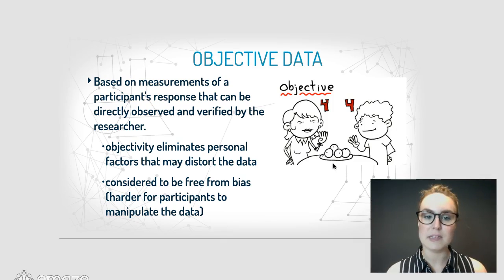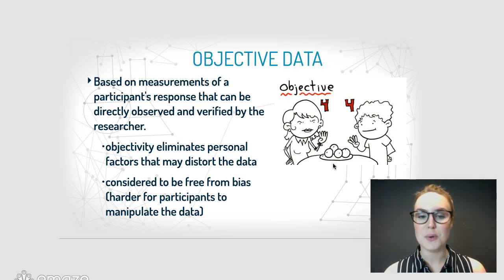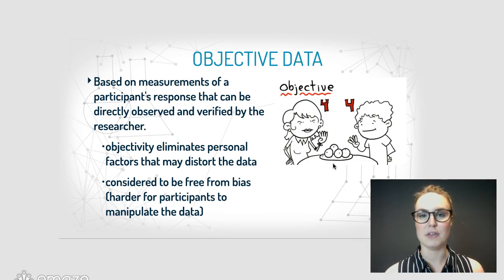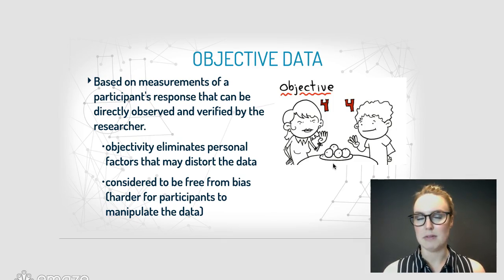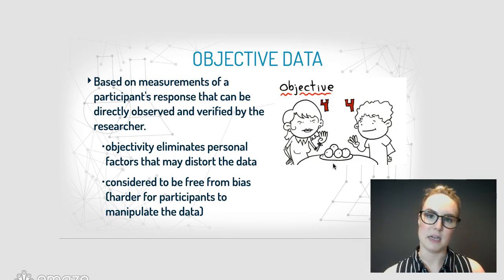Objectivity eliminates personal factors that may distort the data — a nice way of saying it prevents people from lying. It's also about different people's interpretations. If it's objective, you can see it, you can count it, you can measure it. It is considered to be free from bias, and it's harder for participants to manipulate their data.